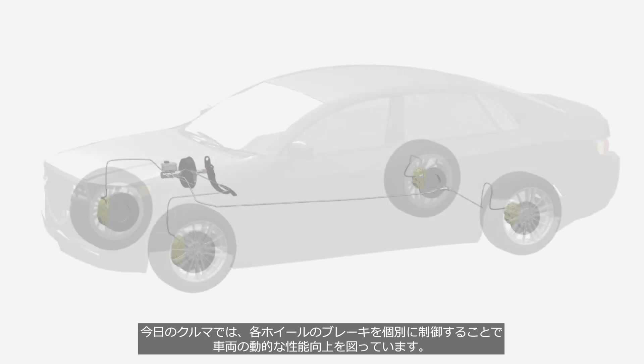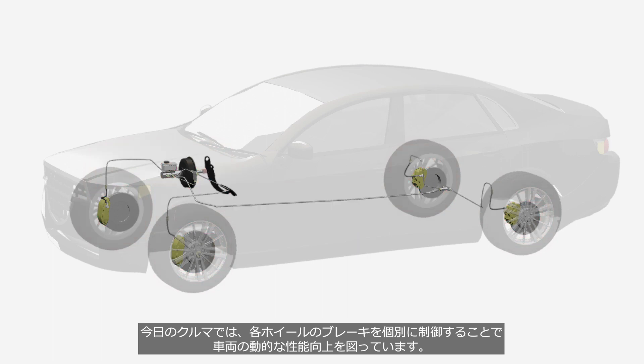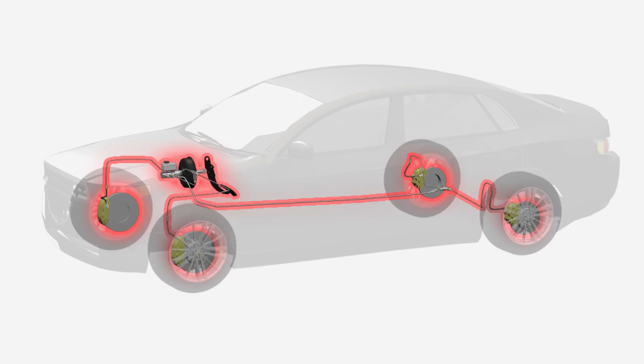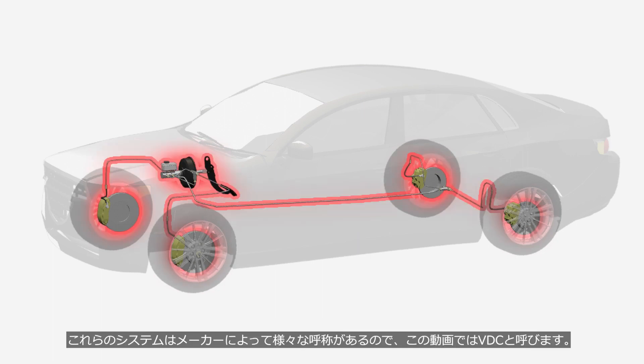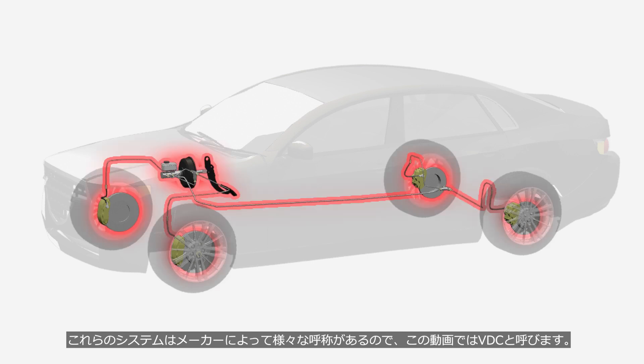Nowadays, a vehicle's dynamic performance is enhanced by individually controlling the brakes on each road wheel. These systems have various names depending on the car manufacturer, so this video refers to them as VDC.